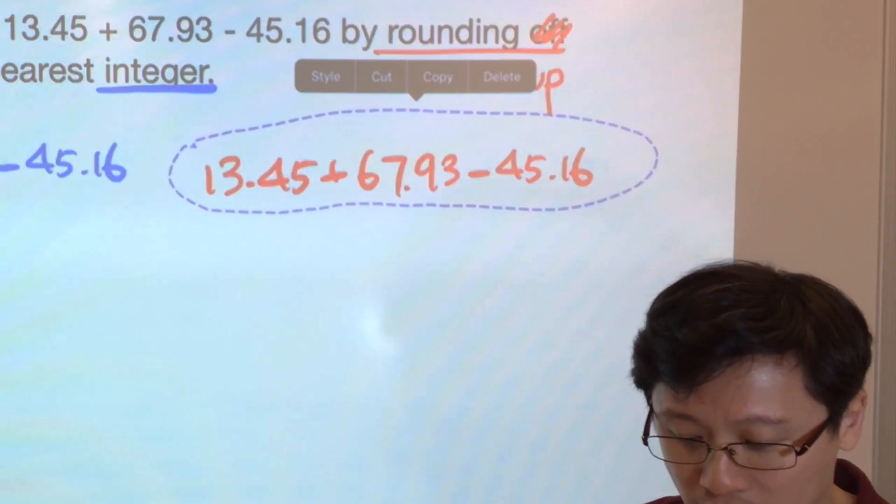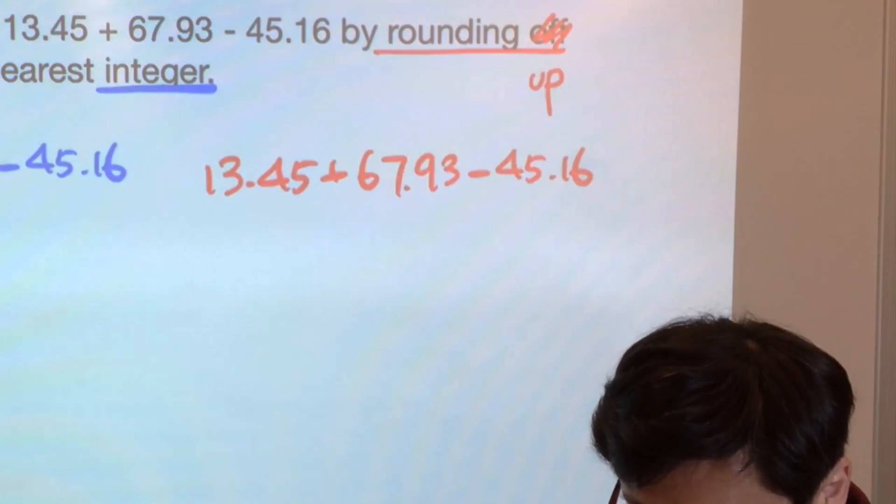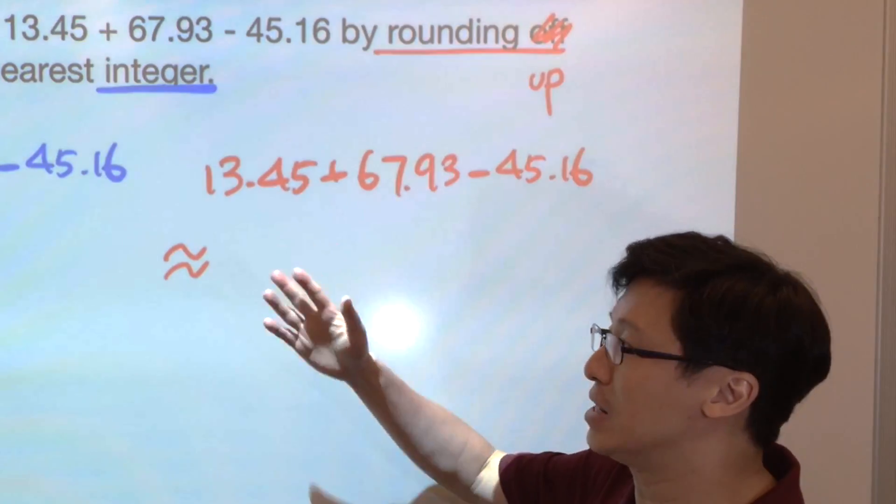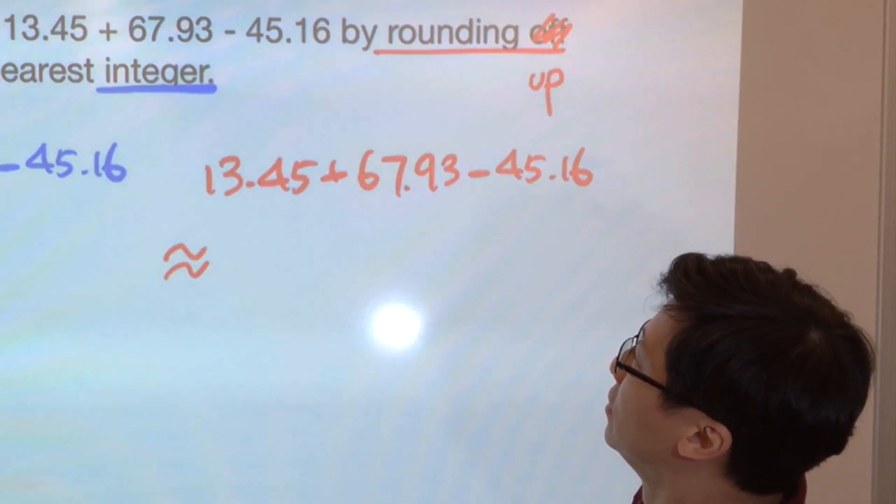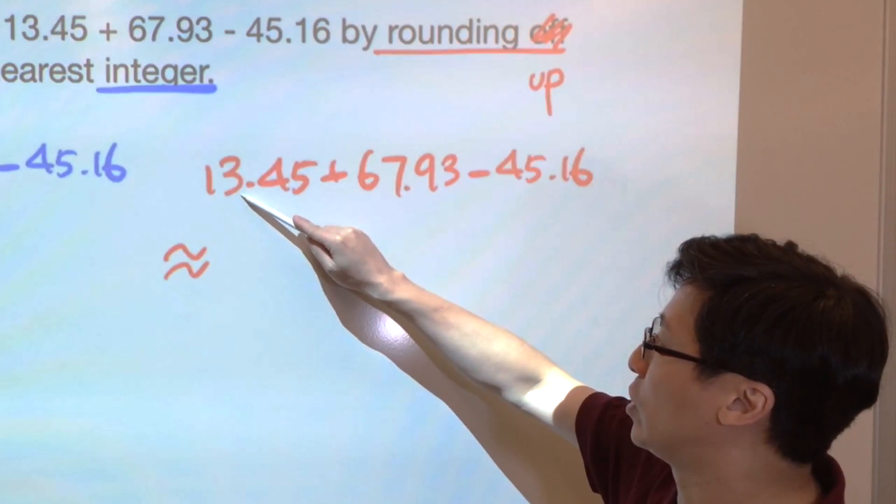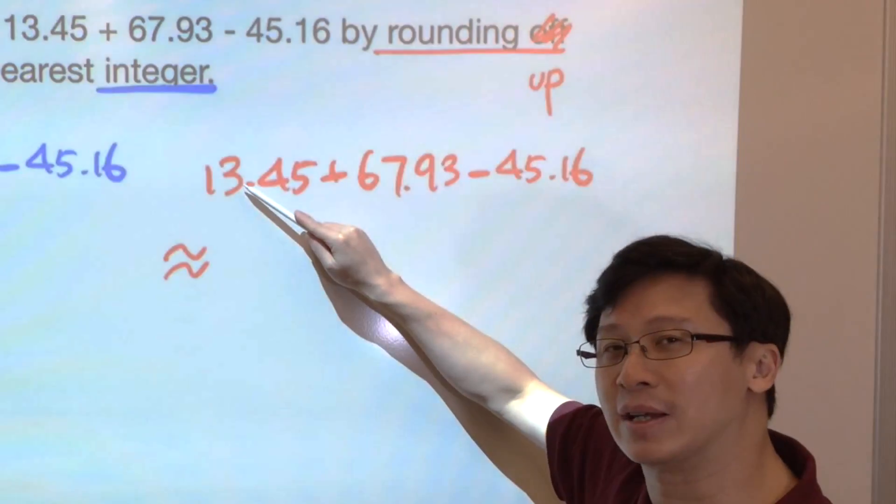This is the original expression. Now we are going to round up, not round off, round up. That means every number has to be increased. 13.45, nearest integer is 13, and no matter what number is on the right side of the number 3, we simply increase this by 1 to 14.